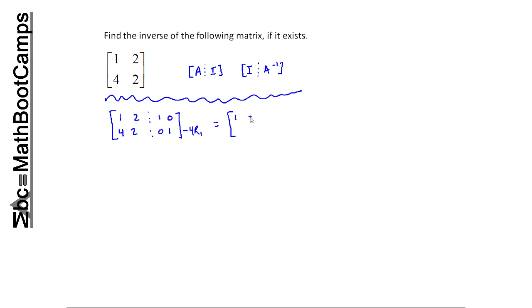When I do that, of course row one is truly staying the same, so I leave one, two, one, zero. And I say, okay, minus four times one is minus four, plus four is zero.